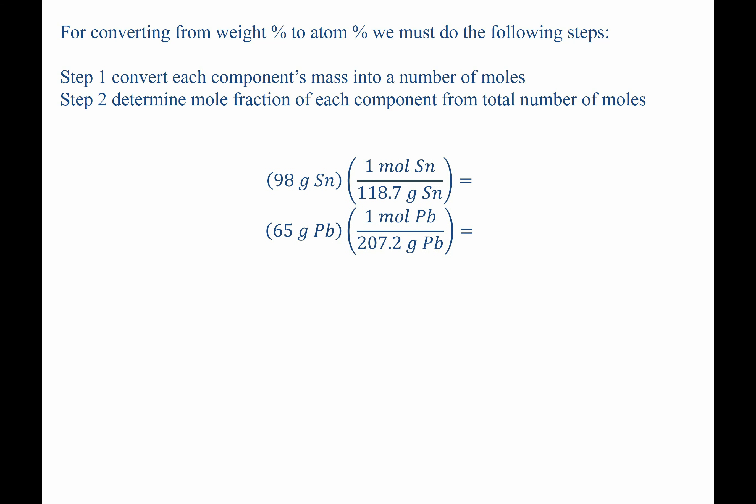So for step one, to determine the number of moles of each, we're going to take the mass of each component and divide it by its atomic mass. For tin, I find that that gives us 0.8256 moles of tin. For lead, I find that that's equal to 0.3137 moles of lead. Now that we have the moles of each, we finish step one.